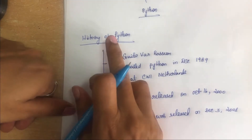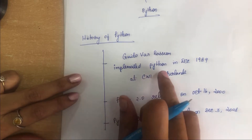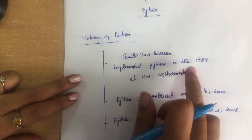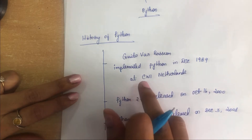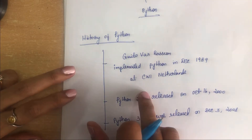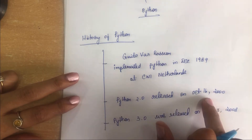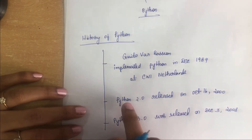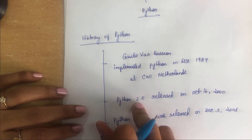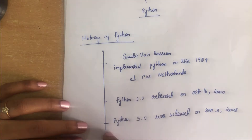Coming to the history of Python: Guido van Rossum implemented Python in December 1989 at CWI, Netherlands. It was a successor of the ABC programming language. On October 16, 2000, Python 2.0 was released with many new features. And on December 3rd, 2008, Python 3.0 was released.